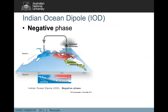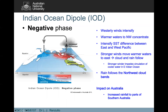In the negative phase, there are warmer than normal waters over the northwest coast of Western Australia and cooler than normal waters off the east coast of Africa. Those warmer than normal waters lead to increased evaporation, increased convection, rain in the area, and the circulation intensifies. In this case, there's an increased chance of rain across Australia.